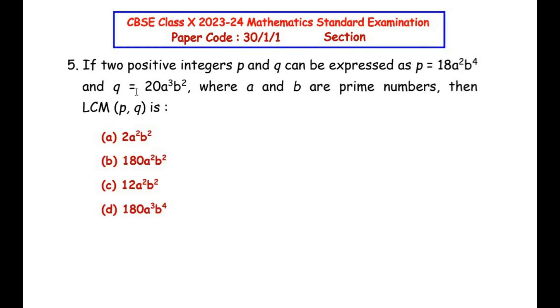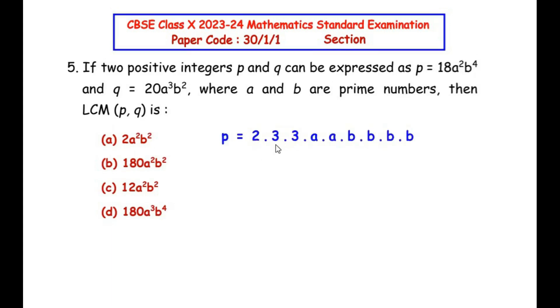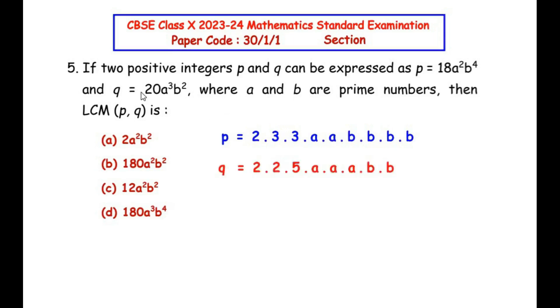For that, let us write down the prime factors of p and q, starting with p. 18a²b⁴ can be written as 18 in terms of prime numbers, that is 2 times 3 times 3, and a² is a times a, and b⁴ we have multiplied b four times. Similarly, let us write down the prime factors of q. 20 could be written as 2 times 2 times 5, a³ here we have multiplied a three times, and b² is b times b.